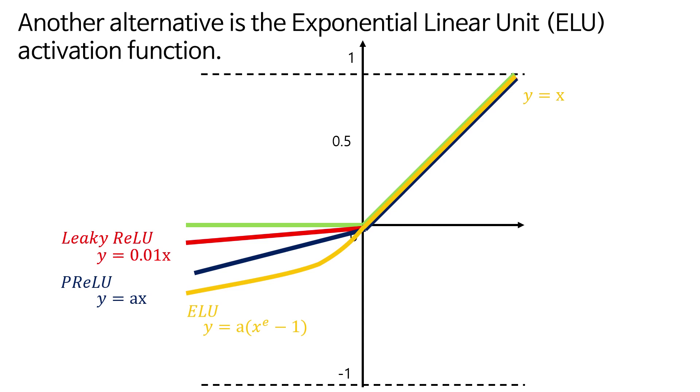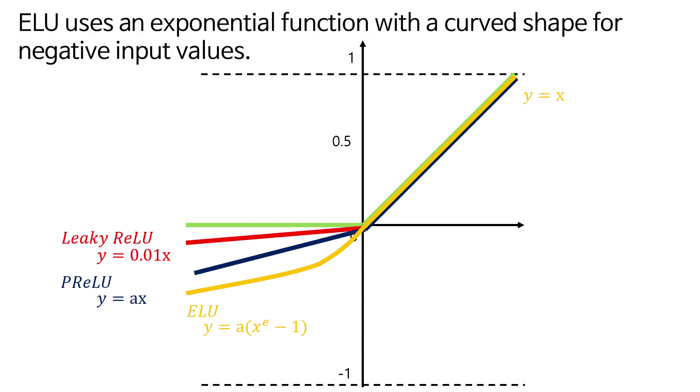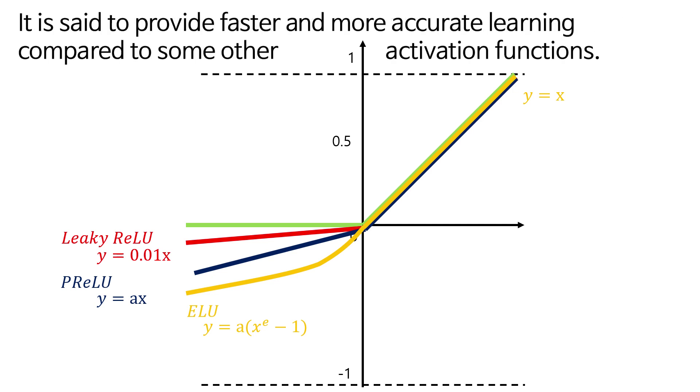Another alternative is the exponential linear unit, ELU, activation function. ELU uses an exponential function with a curved shape for negative input values. It is said to provide faster and more accurate learning compared to some other activation functions.